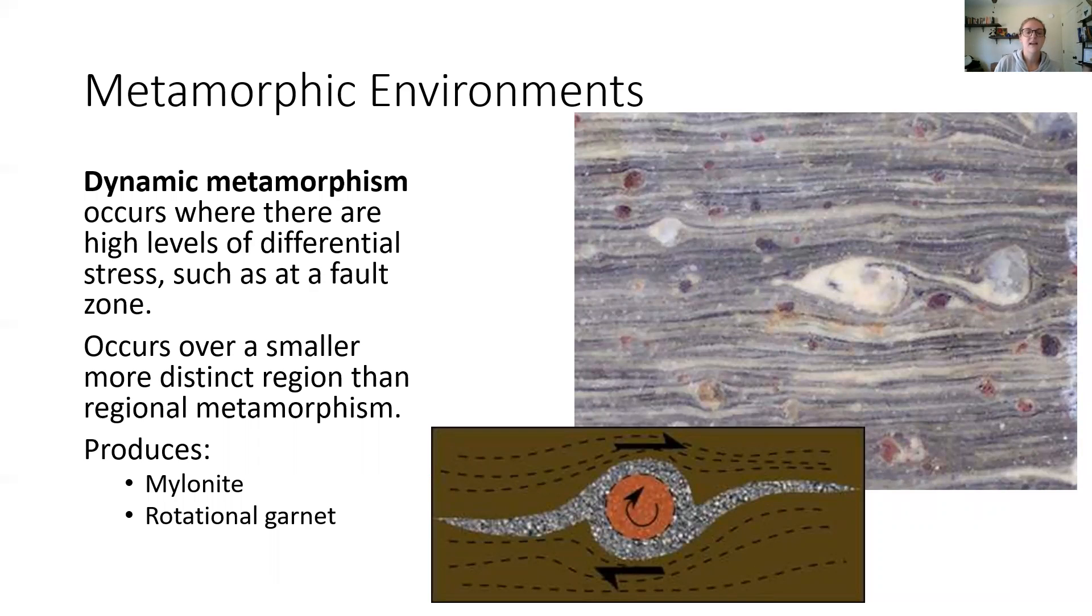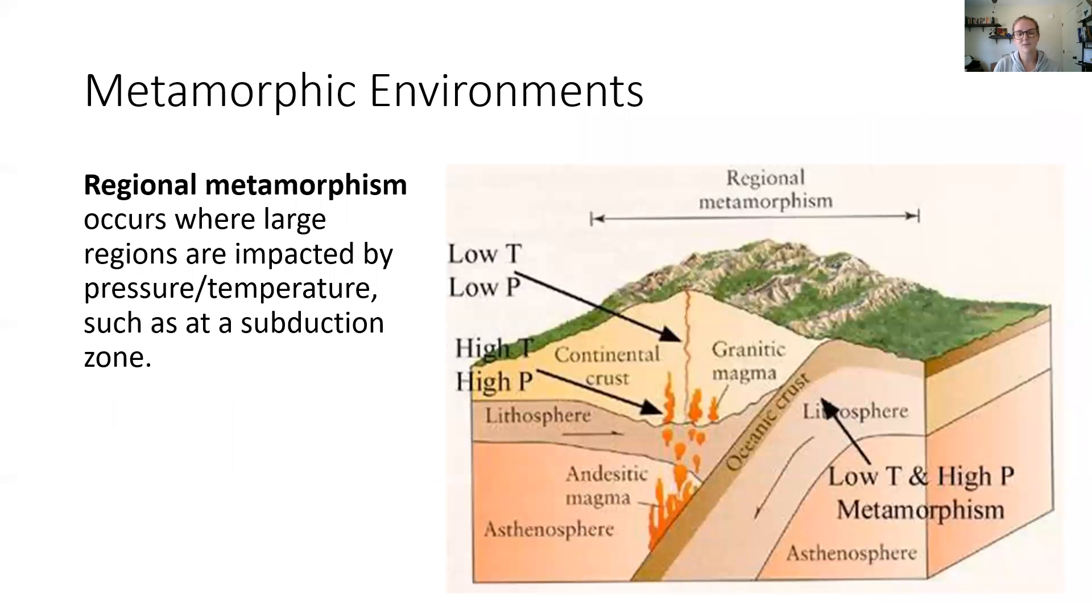All right. So I said dynamic metamorphism typically occurs over small scales. Regional metamorphism is what occurs over these huge scales. So this occurs when over a very large area,